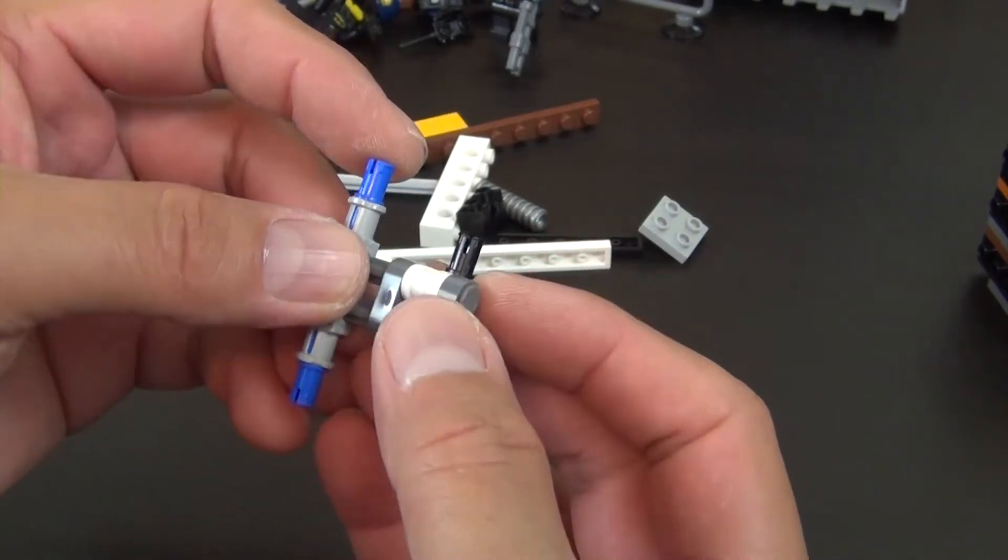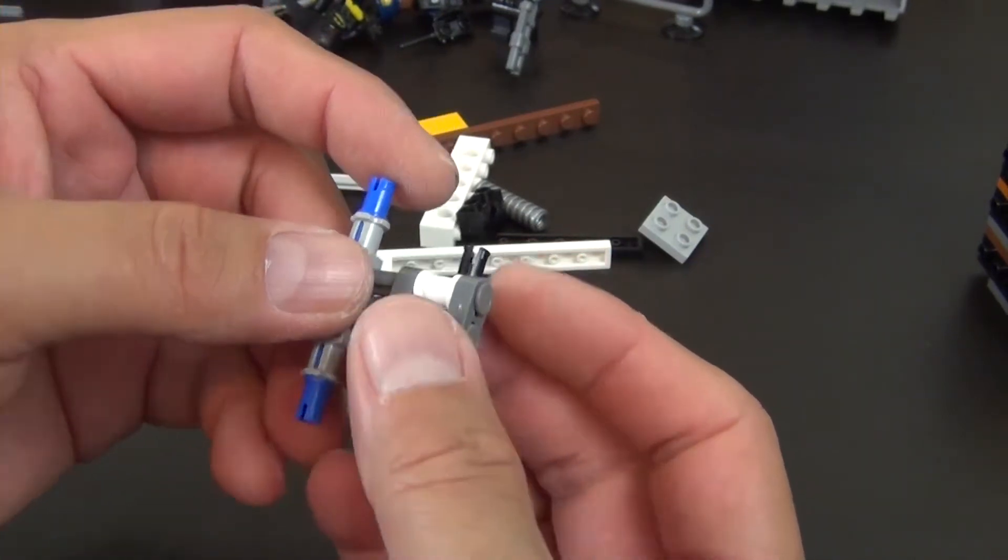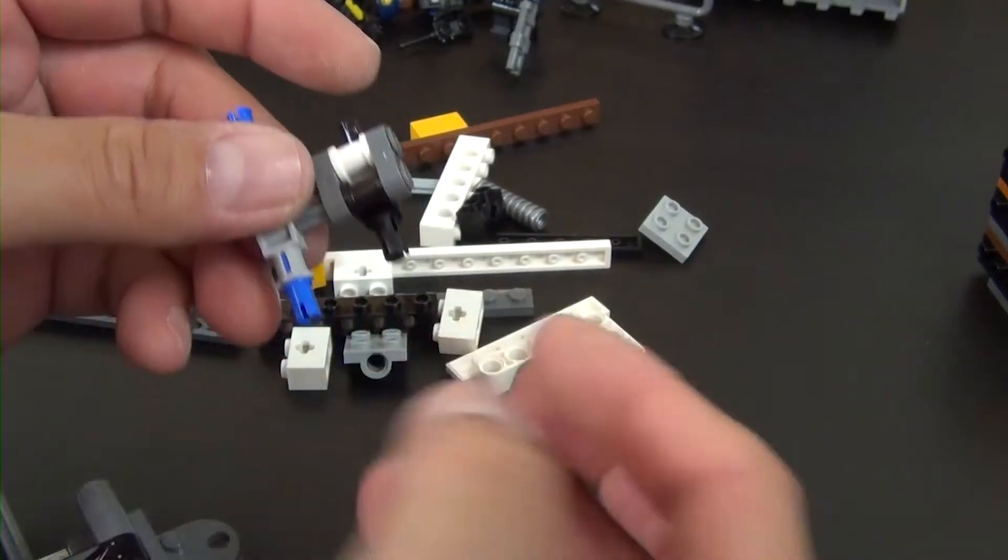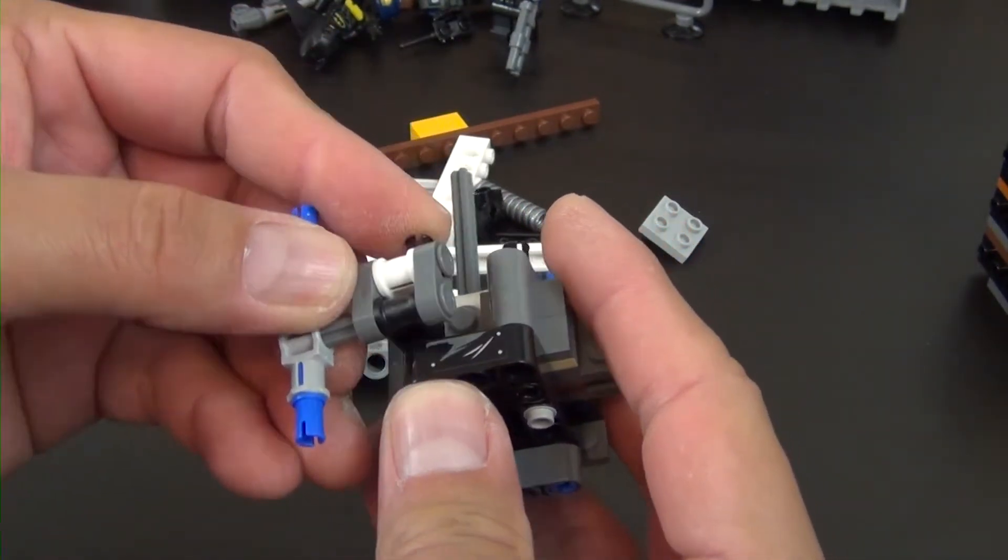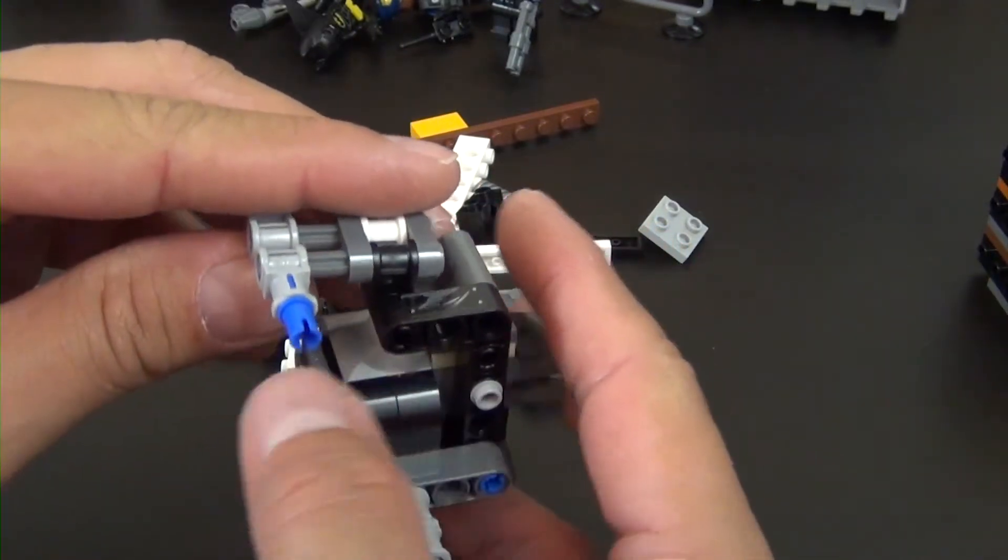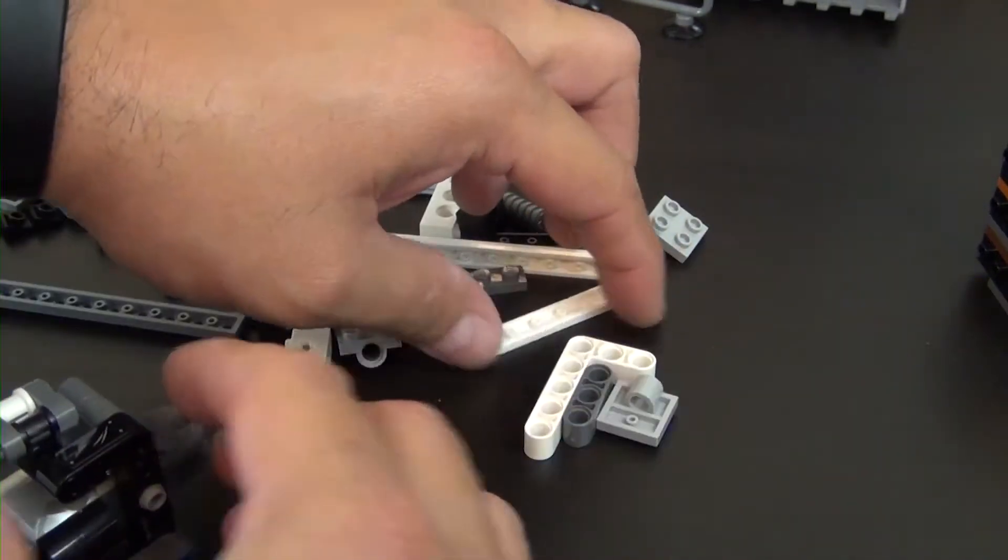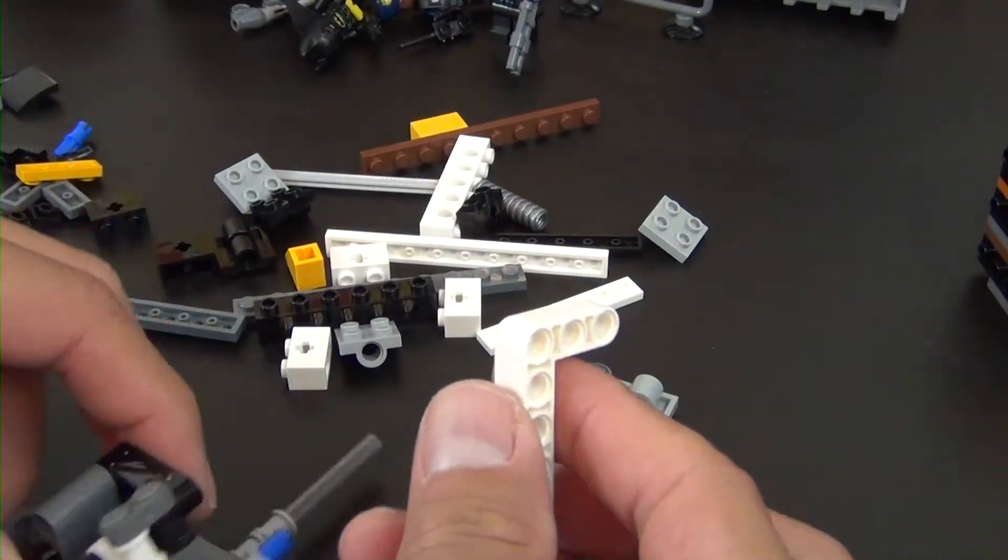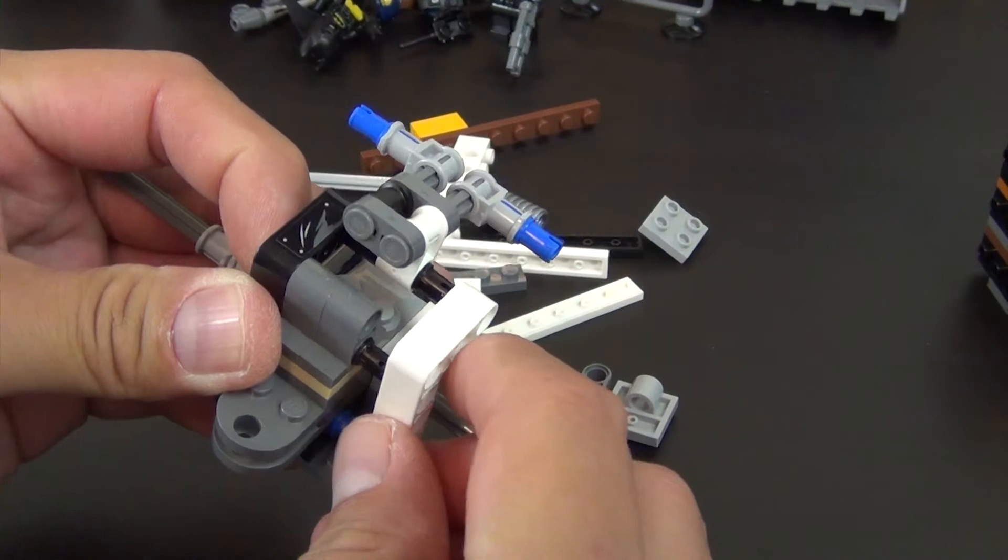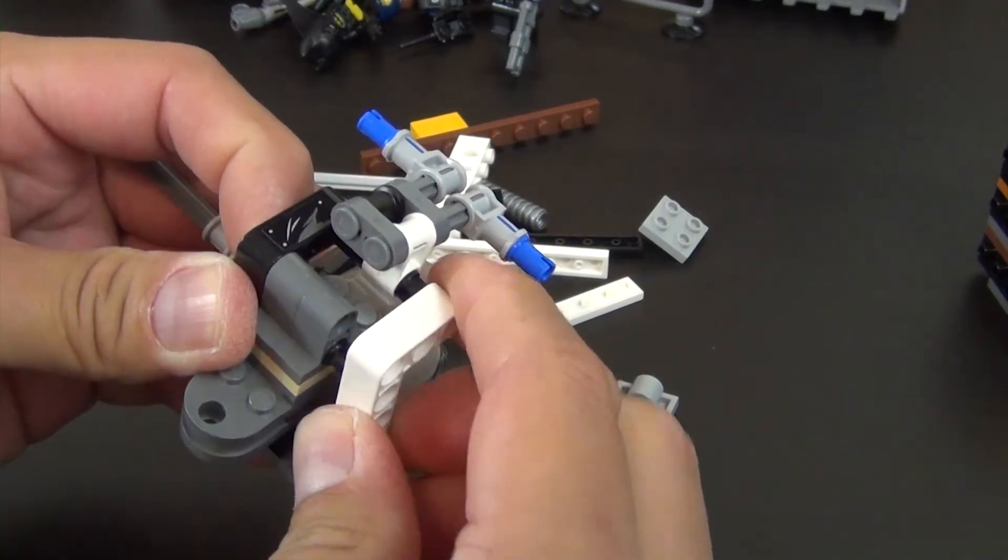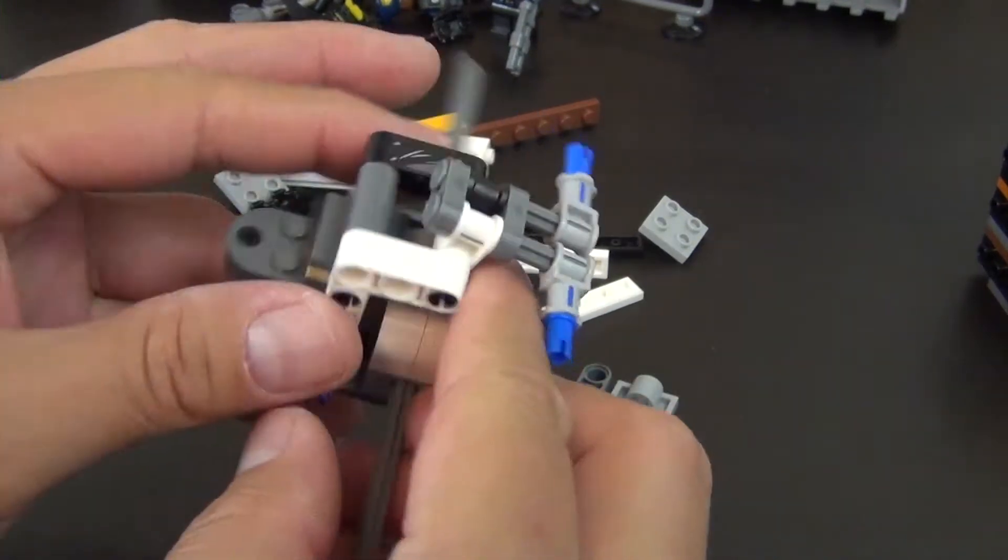All right, so this looks good. Bring this back over, slide that in there. Now we have this white piece that slides in on that side.